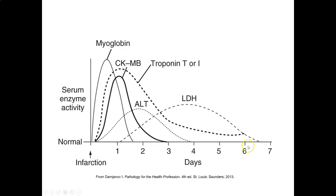Looking at the different heart markers — they used to use ALT, LDH, and others — but the ones we're really interested in are myoglobin, CKMB, troponin I, and troponin T. When an infarction happens, myoglobin basically peaks and is cleared almost within 24 hours. Whereas cardiac troponins are a little bit slower to rise, peaking at 12 to 24 hours, and then slowly going down but remaining slightly elevated for weeks.